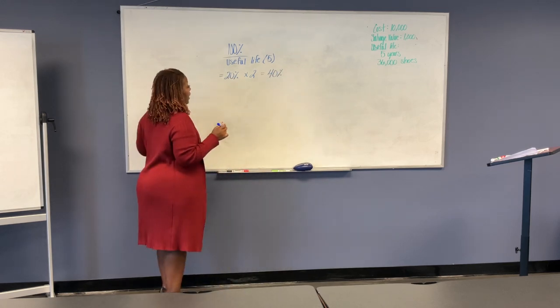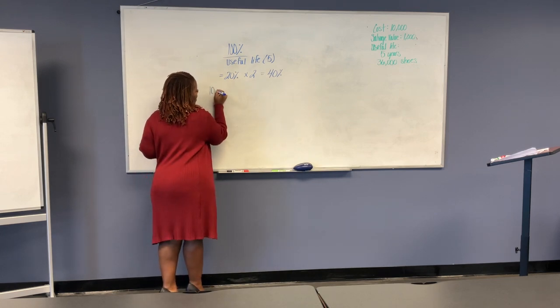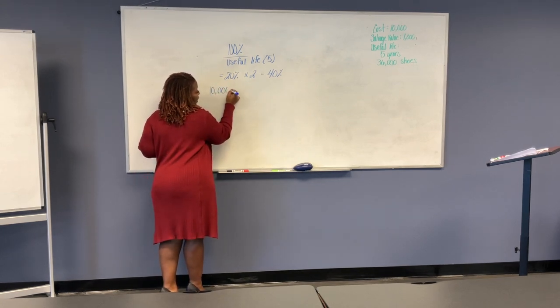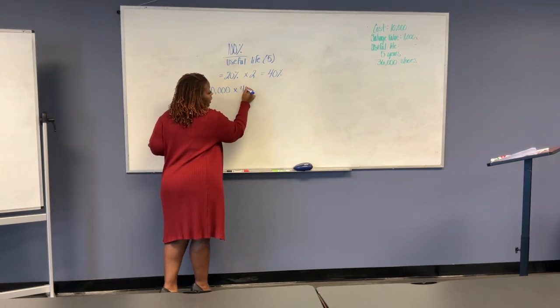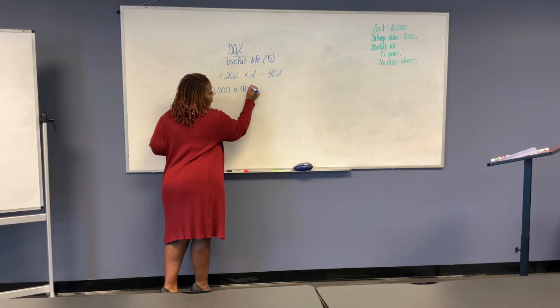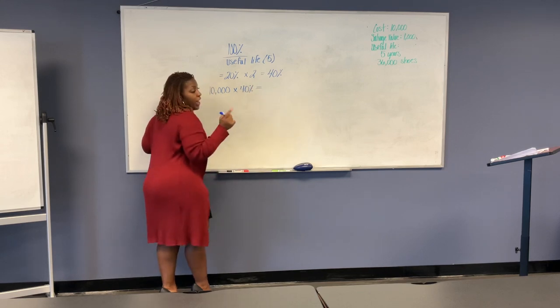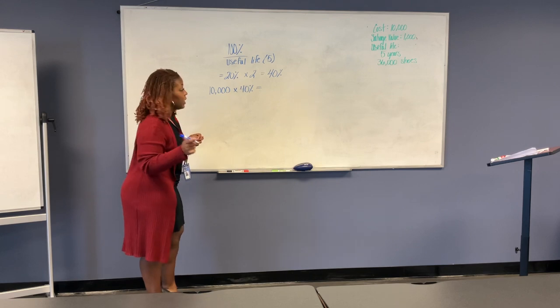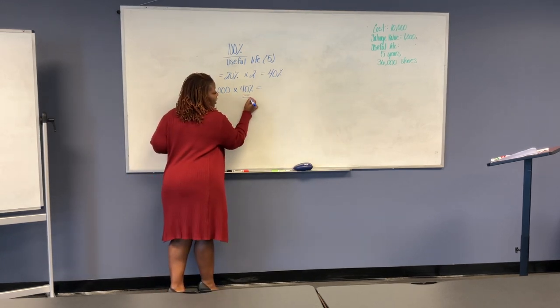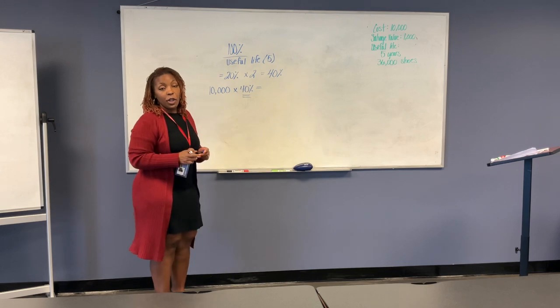You now take the cost and you multiply that by 40%. That will give you your depreciation for that year. So each year, your rate is 40%.